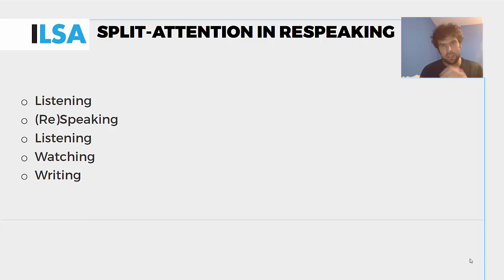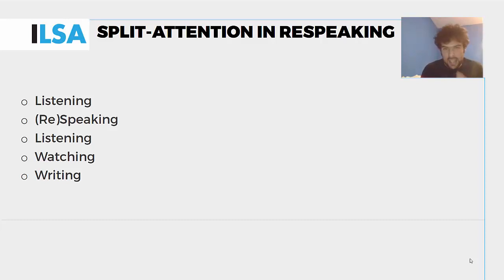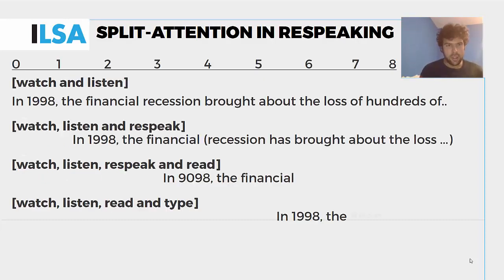We're supposed to be looking at the screen to check the subtitles that we're producing. If there are errors, we may have to correct them by typing and writing. So those two tasks are a bit more complex than what's included in simultaneous interpreting, even though here, unlike in simultaneous interpreting, we're not dealing with language transfer.